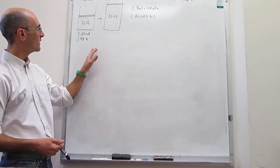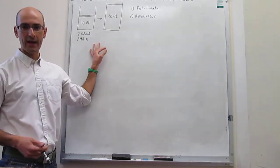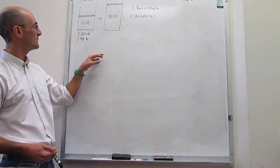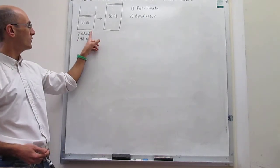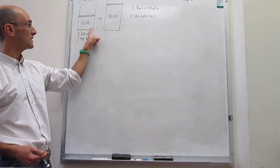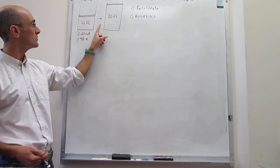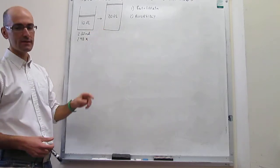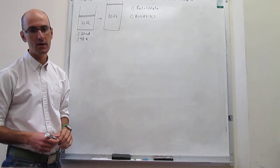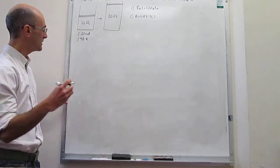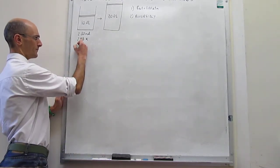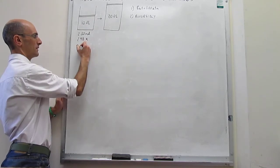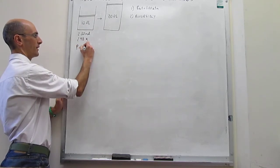Here's the example. We're going to have a gas expansion — this is not going to be an ideal gas — where the gas expands from 10 liters to 20 liters. There are two moles of the gas and the temperature is 298 Kelvin, which means that the pressure according to the ideal gas equation of state will be 4.89 atm.